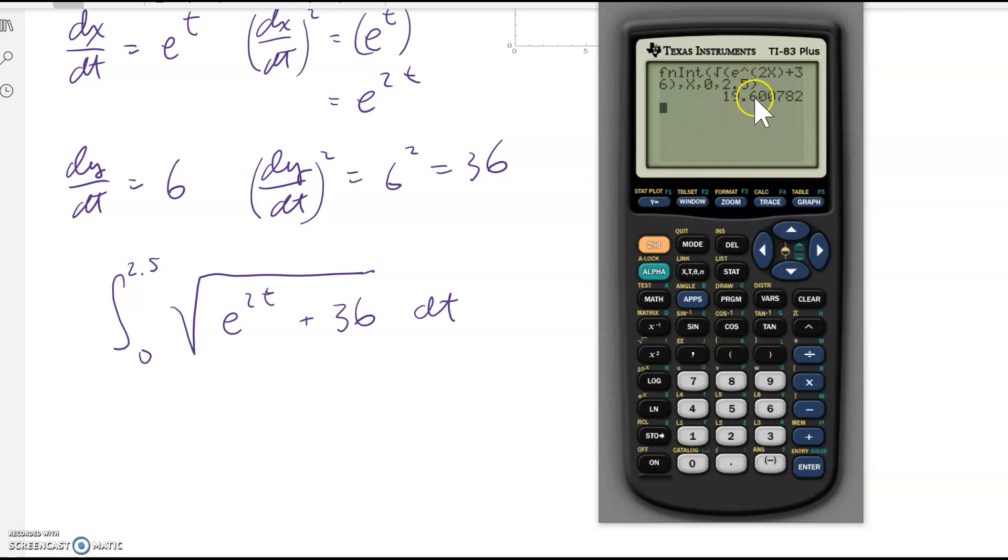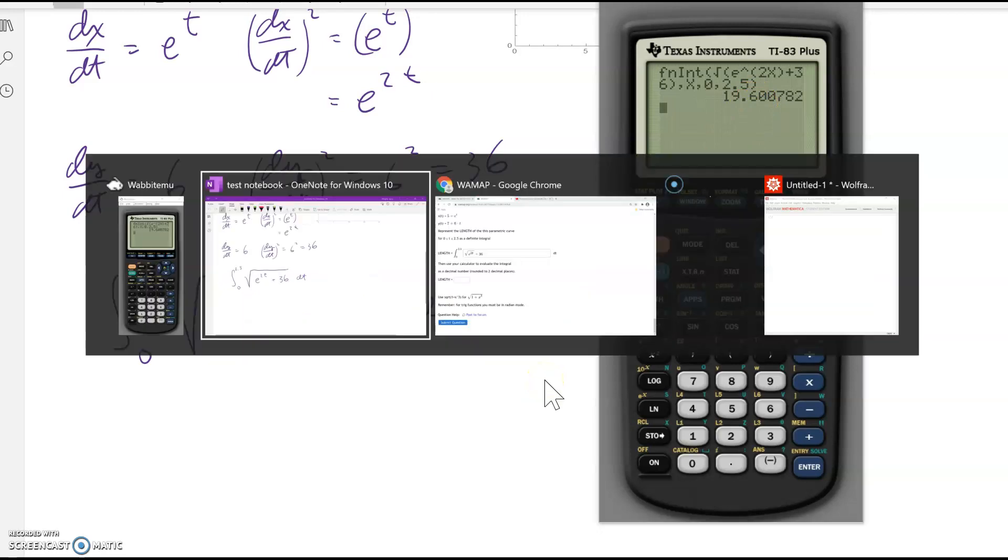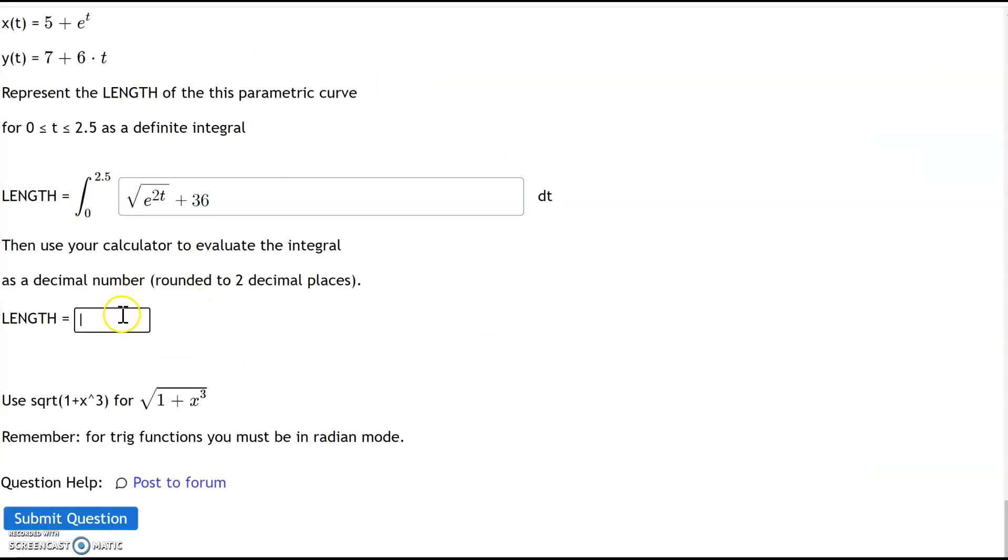Okay, 19.6007. The direction said round to two decimal places, so 19.60. A little bit shorter than I thought when I looked at the graph, but 19.6, that's not that surprising. So now let's type that in, 19.60. You don't really need this zero, but I'll put it in anyway because it says round two digits, and submit.